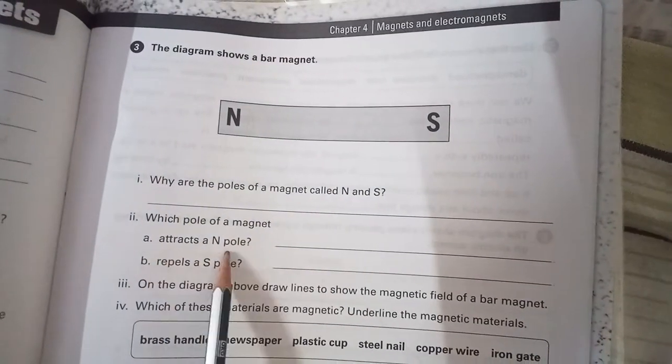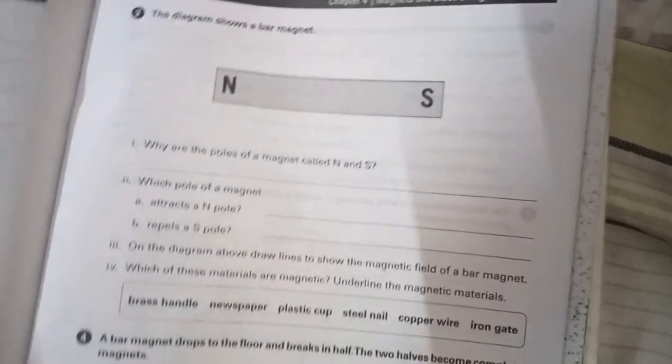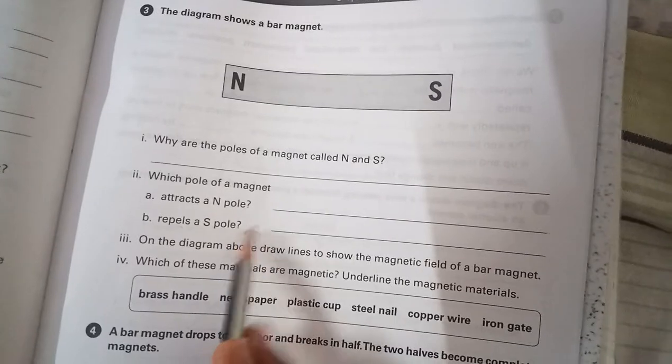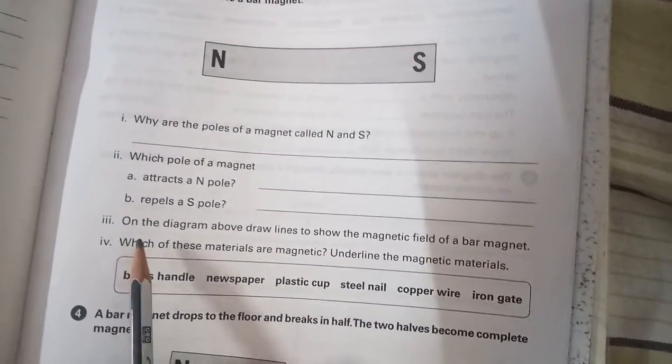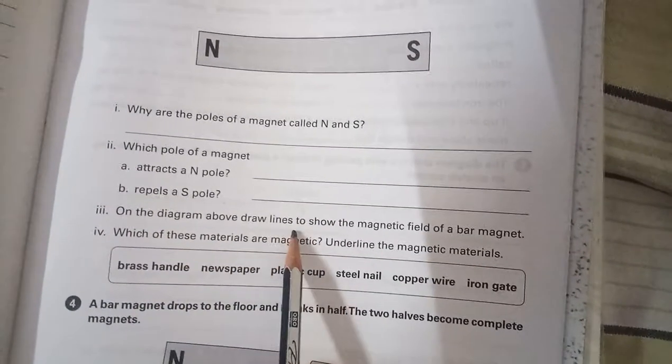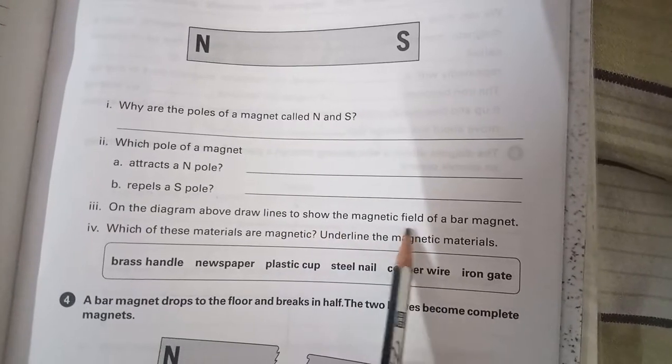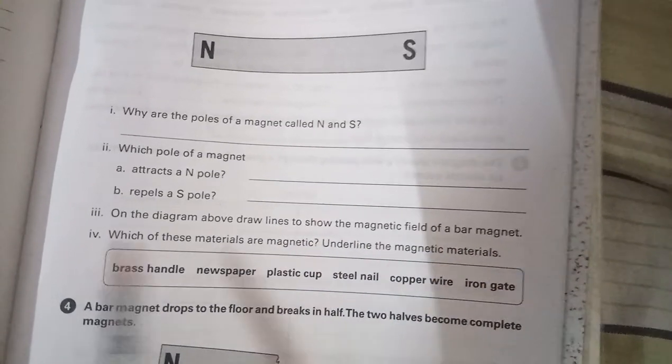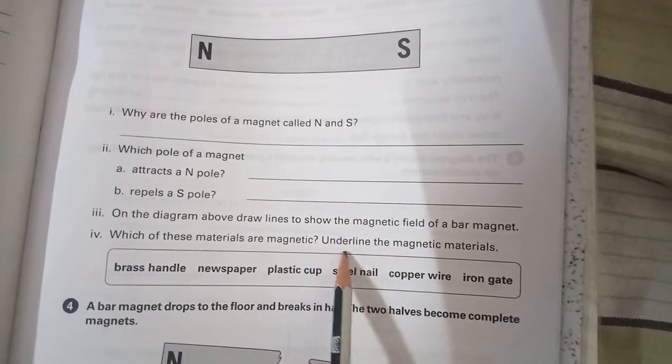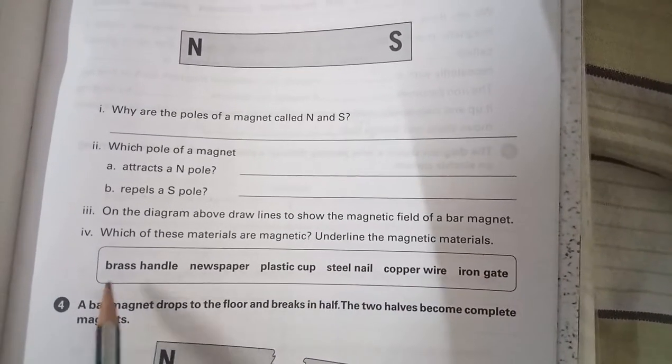Which pole of a magnet attracts N pole and repels S pole? Which force? The diagram above, draw lines to show the magnetic field of a bar magnet. Which of these materials are magnetic? Underline the magnetic materials.